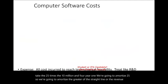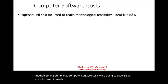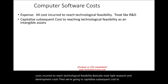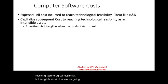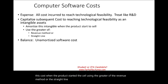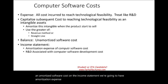To summarize computer software costs: we expense all costs incurred to reach technological feasibility, basically treating them like research and development costs. Then we capitalize subsequent costs after reaching technological feasibility as an intangible asset. We amortize this cost when the products start to sell, using the greater of the revenue method or the straight-line method. On the balance sheet, we will have amortized software cost. On the income statement, we'll have amortization expense of computer software costs and R&D associated with computer software development.